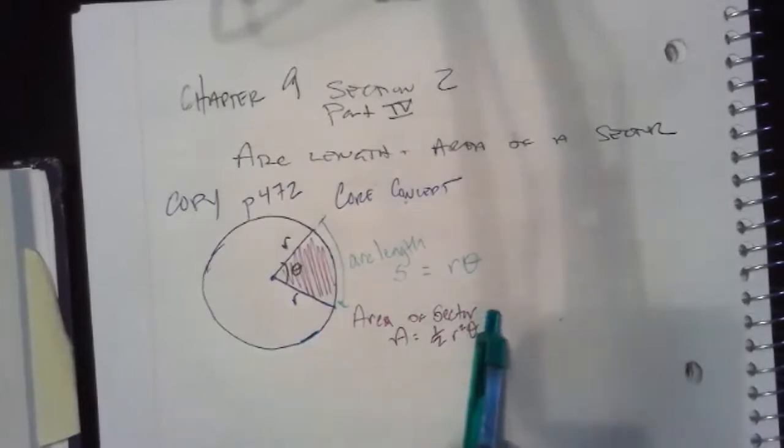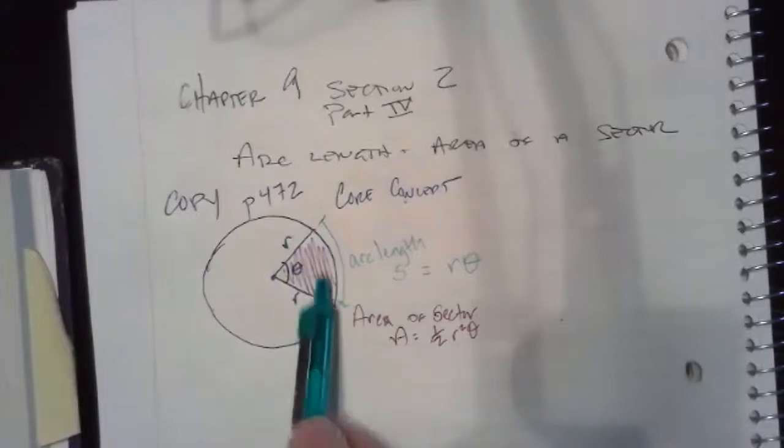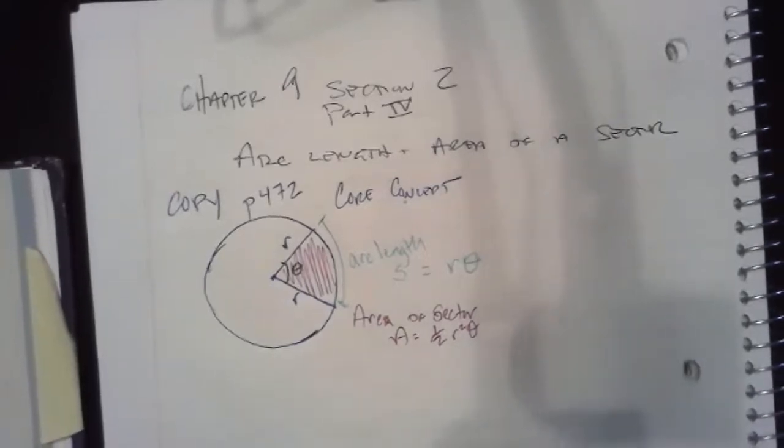And then the area of the sector actually kind of looks familiar. The area is one half r squared theta, so the area of this pizza slice is one half the radius squared times the central angle. There is a great example...